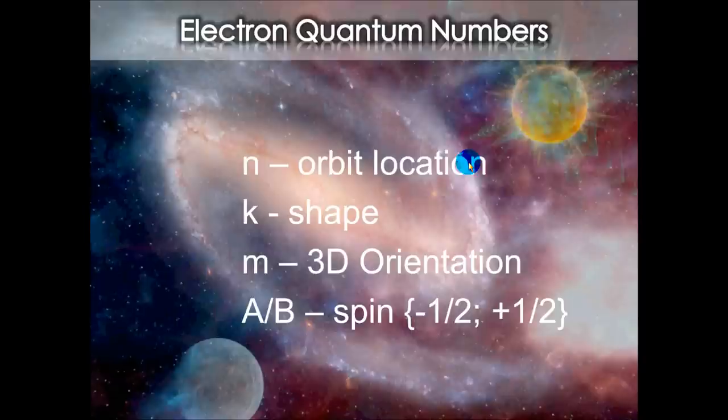The first is the orbit orientation. Basically, does it orbit top to bottom, left to right, and so on? And that's represented by the letter N. K represents the shape or the elasticity of an orbit. Is it perfectly circular or perfectly spherical? Is it a little bit of an ellipsis? It varies from atom to atom. M is the three-dimensional orientation in space.